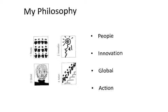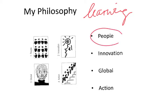So what is my philosophy for learning? There are four elements. The first one is people — for learning, people are the key. The second one is innovation. We have to find different ways to learn in a more effective way, and maybe not everything works the same for everyone, that's why you try different ways.